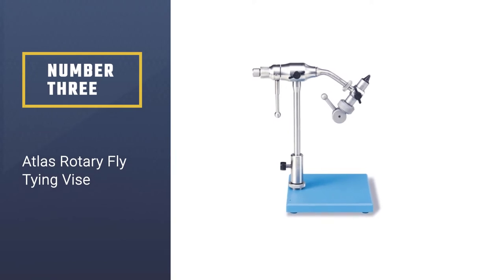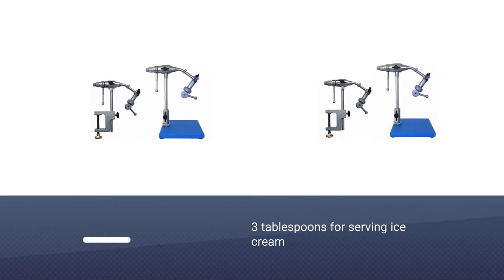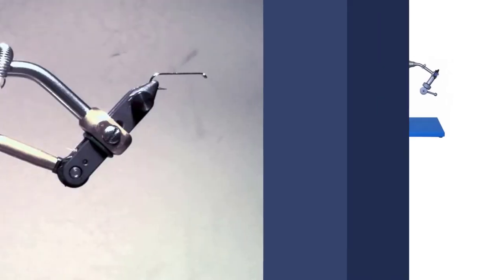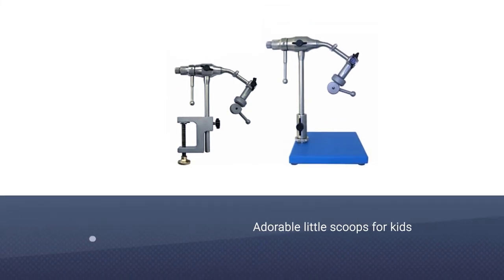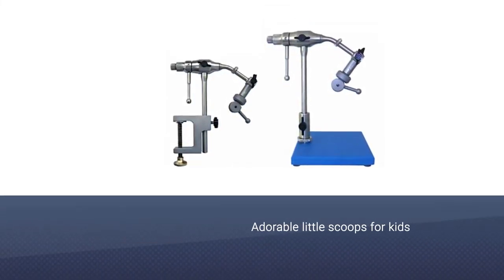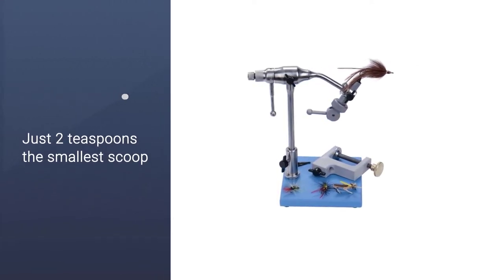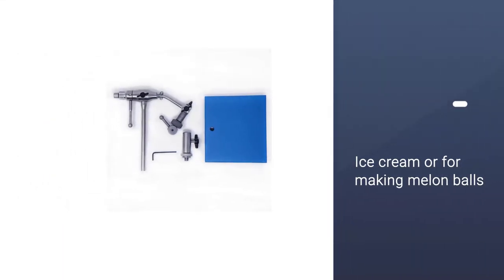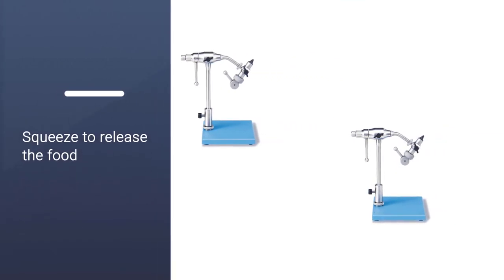Number three: Atlas rotary fly tying vice. The Atlas rotary vice is an excellent choice for intermediate fly tiers. Built like a tank, the full rotary vice features a rock-solid pedestal and C clamp. A material clip is included as well, but no bobbin cradle. Holds hooks in all sizes from 2/0 all the way down to 18. Downside: the plastic screw that holds the main arm can be a little weak at times. The base is extra heavy. Even when tying large stoneflies when applying torque, it doesn't move.